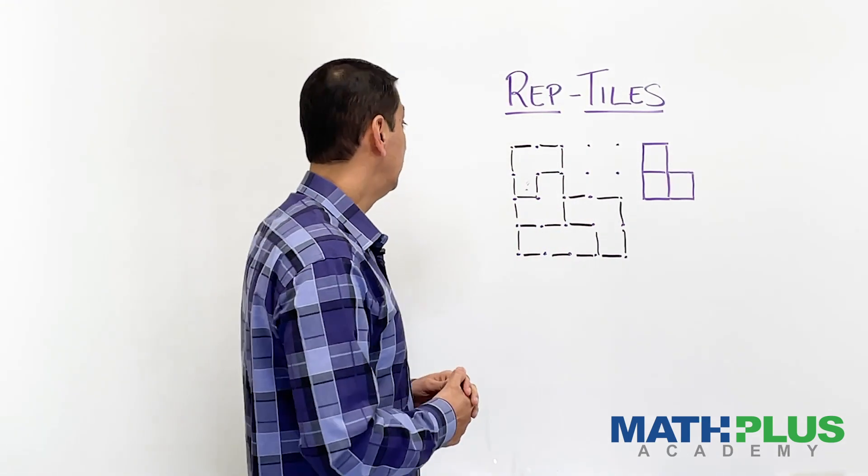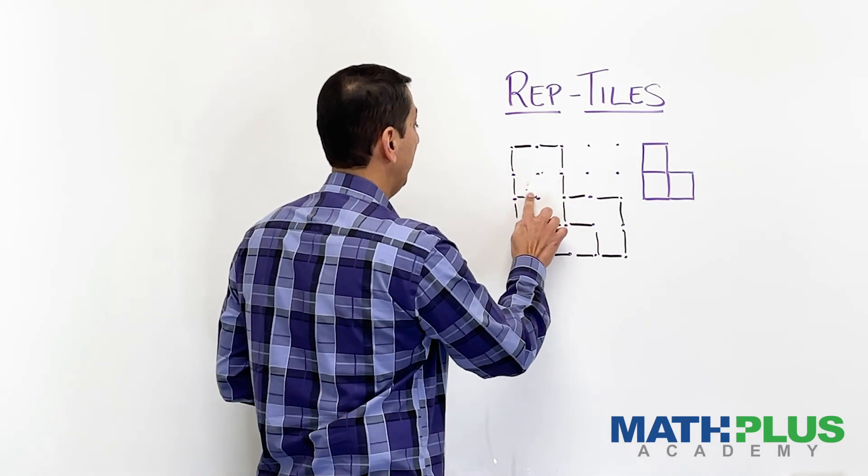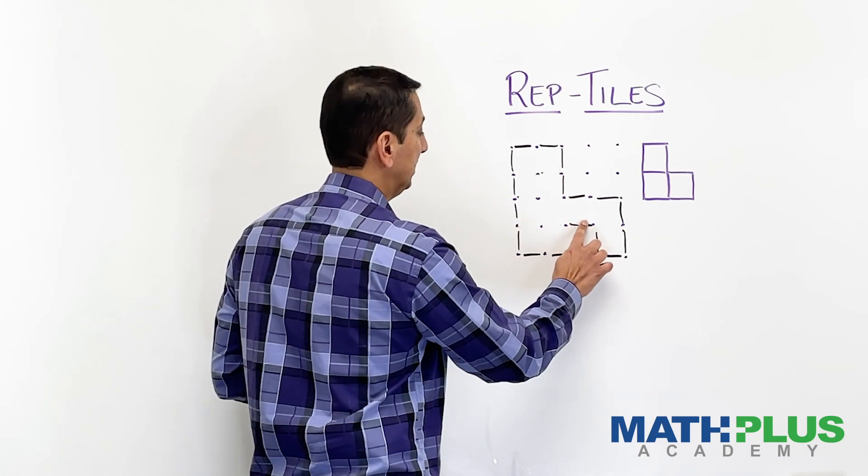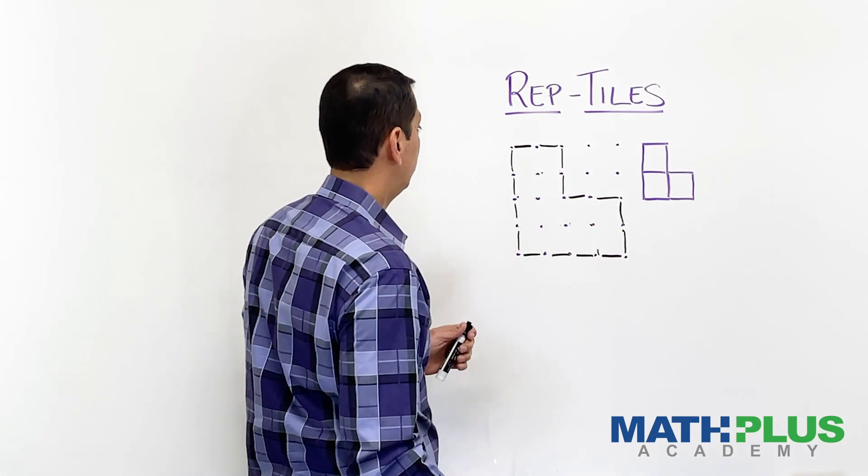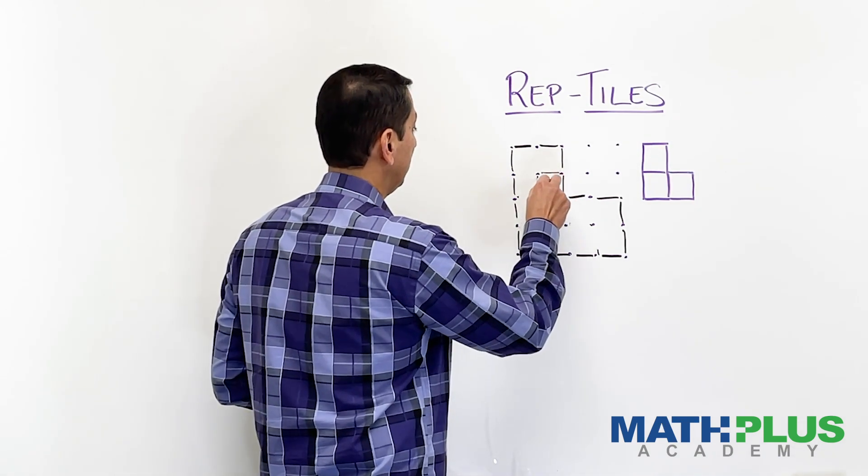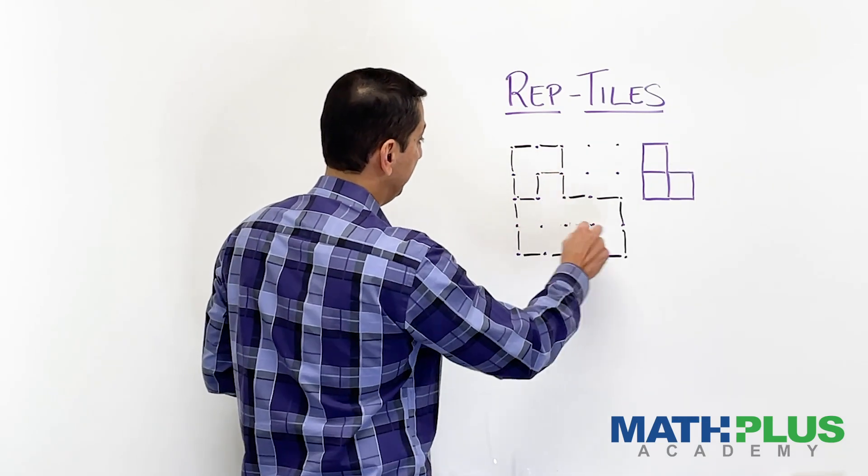Okay, so if you fail, you just start over. So I can erase this and try something different. Let's see. So I'll still try this, I think, in the corner. And then last time I tried that.